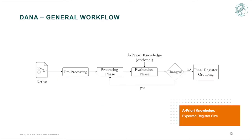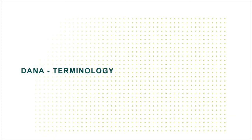So let's have a look at the workflow of DANA. We start with the netlist, which is going through three phases, the preprocessing, the processing and the evaluation phase, until we end up with the final register grouping. But before we are going to discuss the phases in more detail, we have to introduce some terminology.